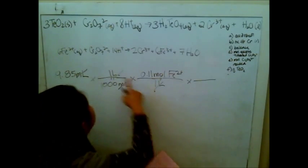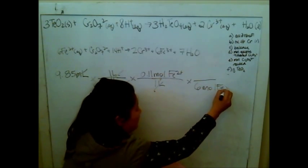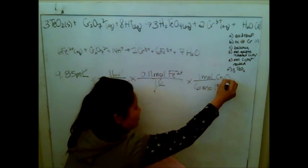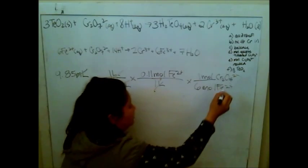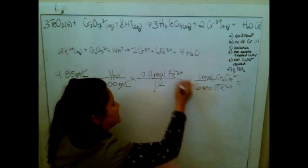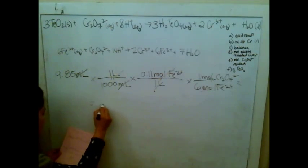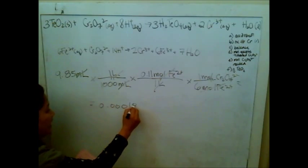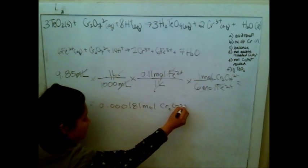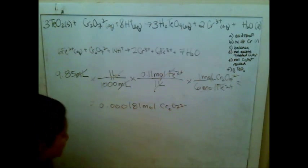And then the last thing I do is I say for every, they balanced it for me already, for every six moles of the Fe 2 plus, I only was able to get rid of one mole of the dichromate, CR2O7 2 negative. Again, this is a true ratio, so I'm happy about that. Something crosses out, so I'm happy about that. And then my final answer ends up being 0.000181 moles of the CR2O7 2 negative. That's what was in excess. So that's the answer for part D.